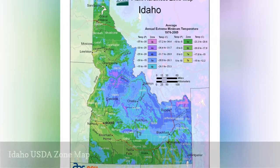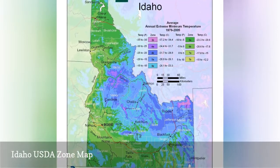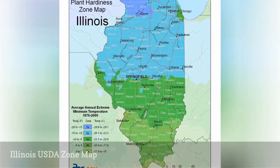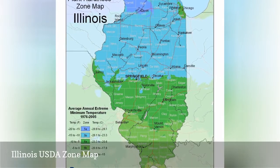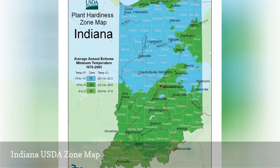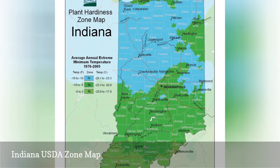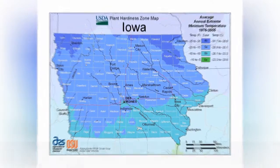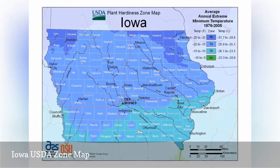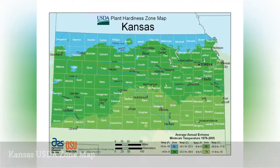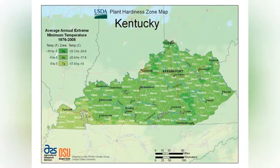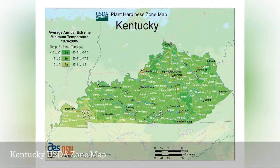USDA zones 3B through 7B are represented in Idaho. USDA zones 5A through 7A are represented in Illinois. USDA zones 5B through 6B are represented in Indiana. USDA zones 4B through 6A are represented in Iowa. USDA zones 5B through 7A are represented in Kansas. USDA zones 6A through 7A are represented in Kentucky.